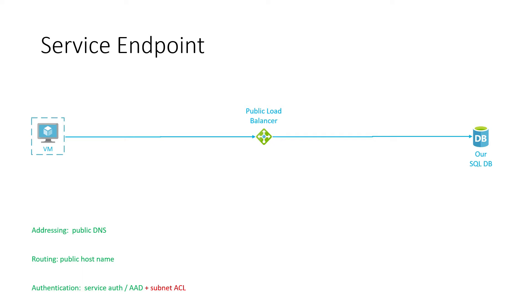When Microsoft released service endpoint, people had a conception that it was akin to placing your SQL database or storage account inside your own VNet. That's not the case. What actually happens is that subnets have unique IDs, and those IDs are passed on networking requests inside the Azure data center. The service endpoint is essentially an access list of which subnets it accepts. When a request is made, the subnet ID is passed across, and the service endpoint checks — on top of your service or Azure AD authentication — whether the request comes from the right subnet. If so, the request is accepted; otherwise it is refused. Service endpoint is a filter at the subnet level.